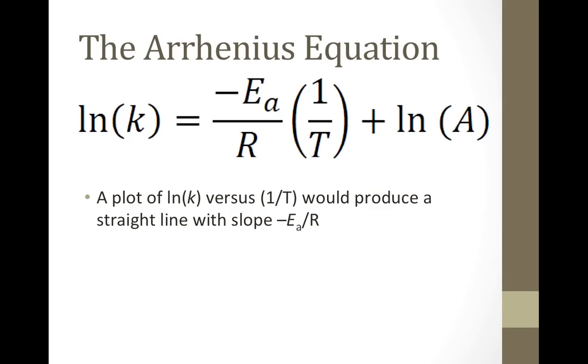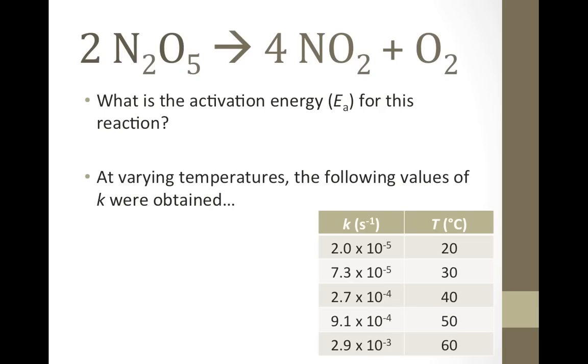Let's look at an example. What activation energy is needed for the reaction of dinitrogen pentoxide decomposing to form nitrogen dioxide and oxygen? If we do several experiments at different temperatures and determine each rate constant using methods like the initial rate method or graphical analysis of the integrated rate law as described in previous videos, we can get data like these here.